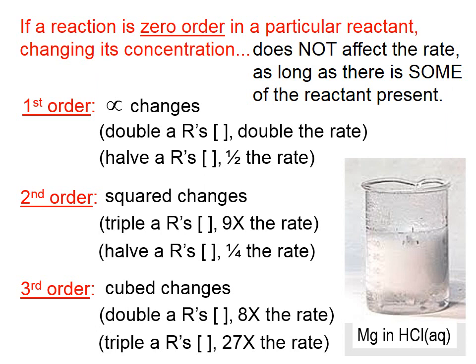Here's a picture on the right of magnesium and hydrochloric acid. Let's pretend that this reaction is first order with regard to concentration of hydrochloric acid. If we double the acid concentration, the reaction rate would double.